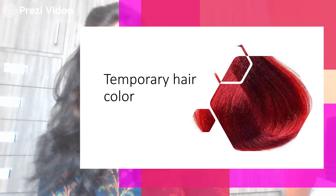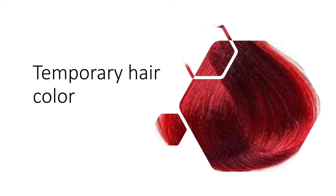Temporary hair color, as the term signifies, is not permanent. It fades off easily, remaining for a short duration — at least three to four washes — and then goes off automatically. The reason is that these colors are only able to provide color to the outermost layer of the hair, that is the cuticle part, and are not able to penetrate the inner layers. That is why they fade off easily after three to four washes.